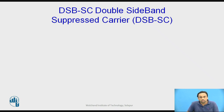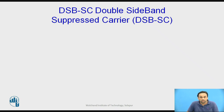Recall that the bandwidth required to transmit a DSB-SC signal is 2fm. Now we will calculate the power required to transmit, by switching on to the examples.